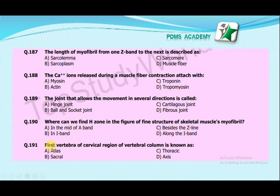The first vertebra of the cervical region of the vertebral column is known as: atlas, sacral, thoracic, or axis? Atlas is the first vertebra present in the cervical region, while the axis is the second vertebra present in the cervical region.